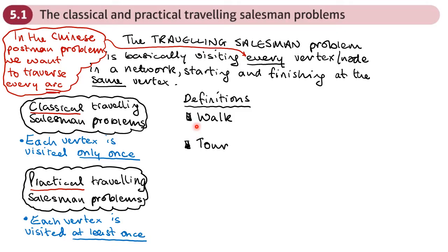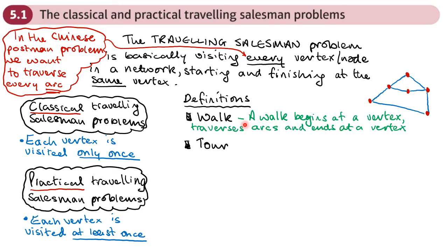Now we've got a couple of definitions to go through: the definition of a walk and the definition of a tour. Starting with a walk — a walk begins at a vertex, traverses arcs, and ends at a vertex. So a walk might start here, go along this edge, and that might be our full walk. Or it might be that we start here, go along these vertices, and finish here. You start at a vertex, you traverse the arcs, and you finish at another vertex somewhere else.